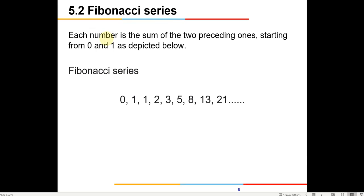The next task is the Fibonacci series. The series starts with zero, then one, then one again, and from there each number is the addition of the previous two. Zero and one gives one; one and one gives two; two and one gives three; three and two gives five; five plus three gives eight; eight plus five gives thirteen, and so on. This is the series which we need to generate, and after generation we need to put it into consecutive memory locations.